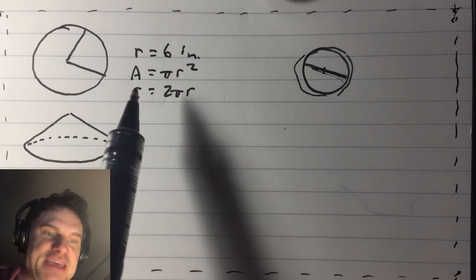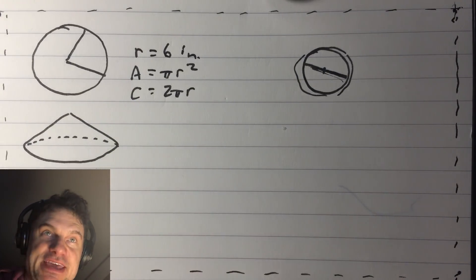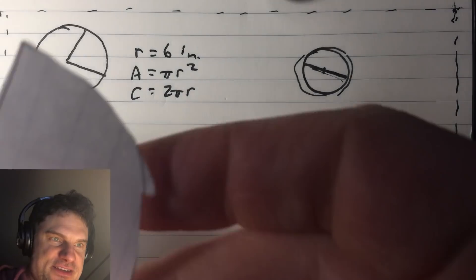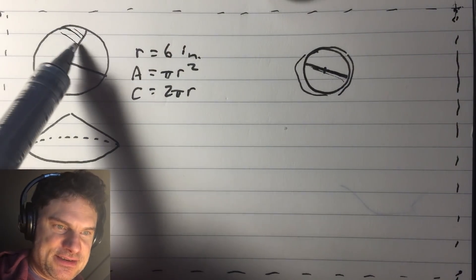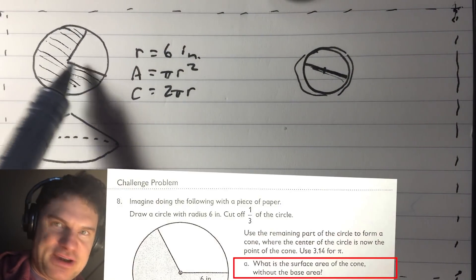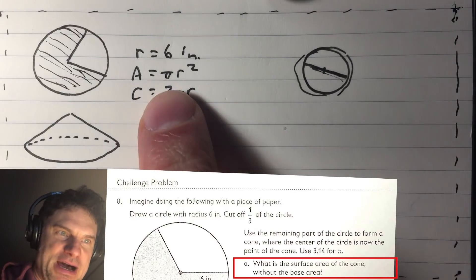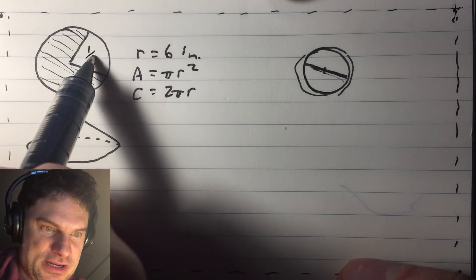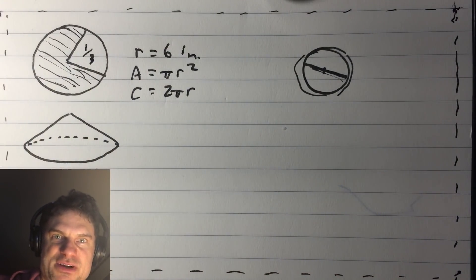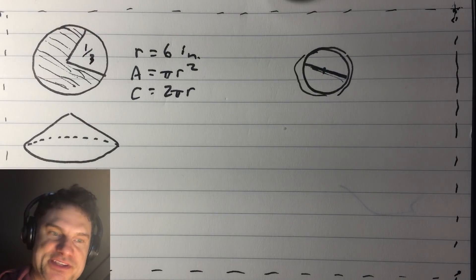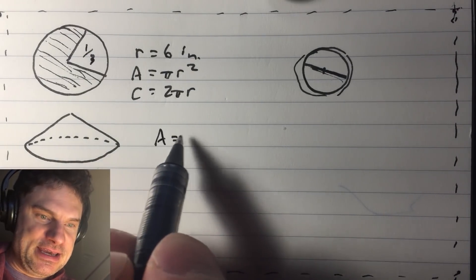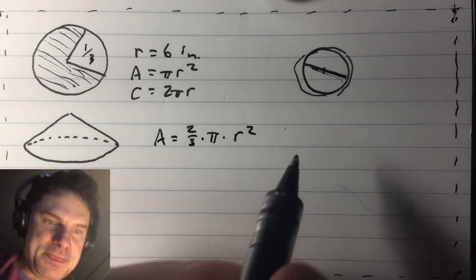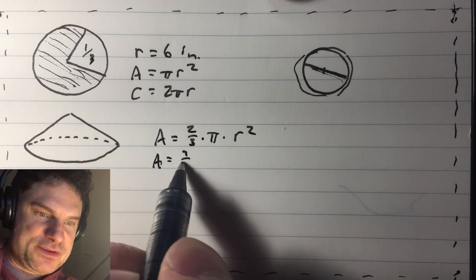Returning — we have now our equations, so now we answer: what is the surface area of the cone without the base area? So that is just this paper part. How do we find the area of a circle? Pi r squared. So we know it's pi r squared, but it is not all of it — it is all but one third. So this means there is two thirds remaining. So the area is two thirds times pi times r squared.